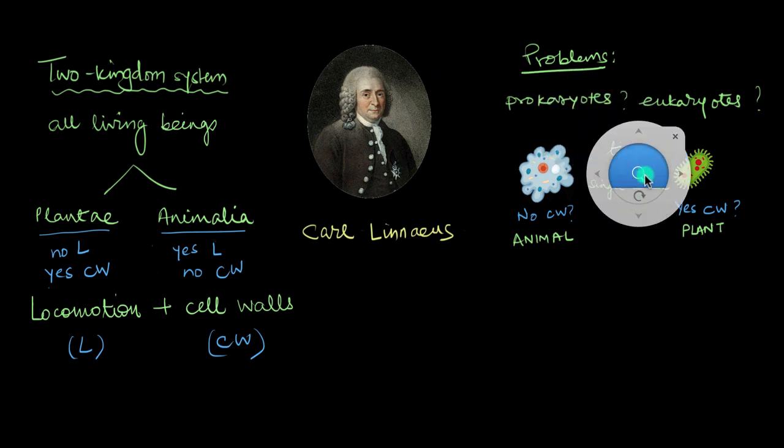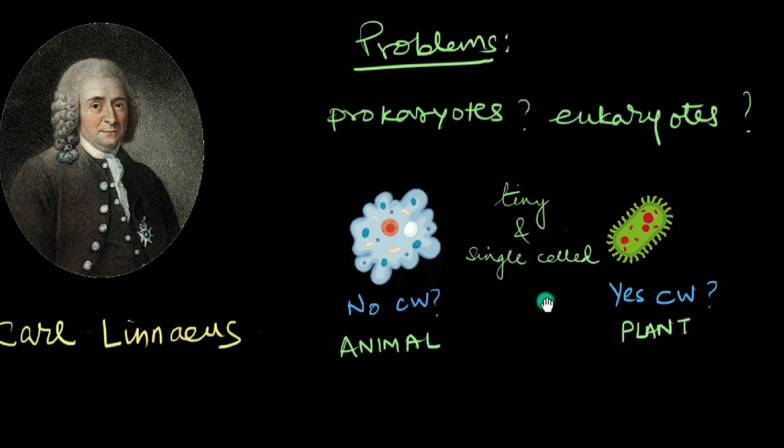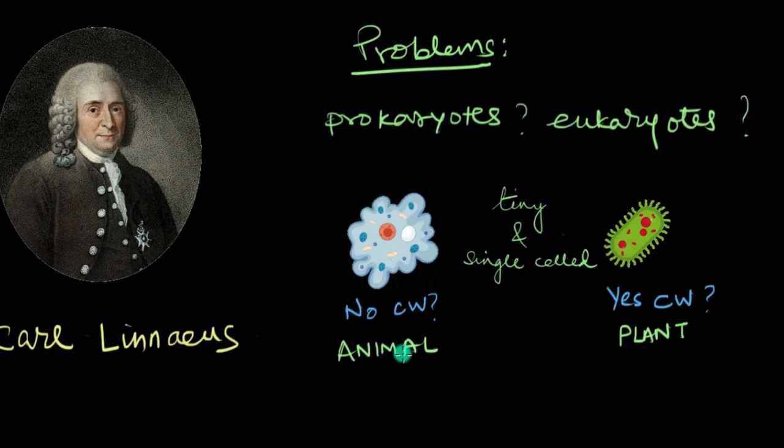Now, let's zoom in here a little bit, right over here. So amoebas were put in animals because they didn't have any cell walls. And bacteria were put in plants because they did have cell walls. It was all very chaotic to be very honest.